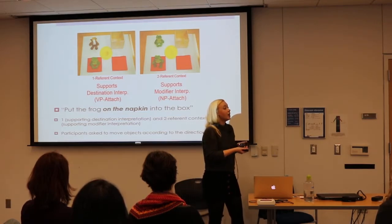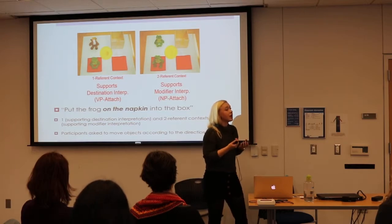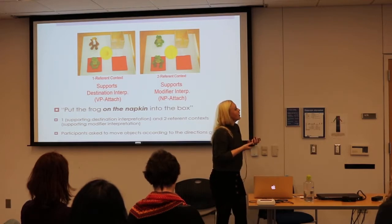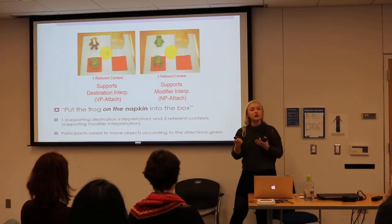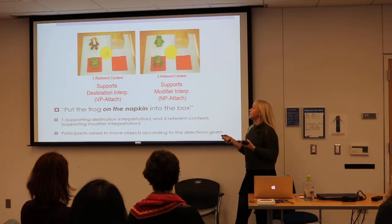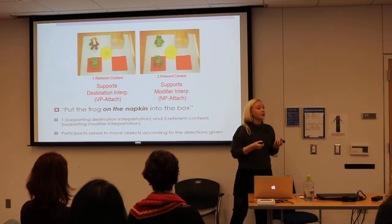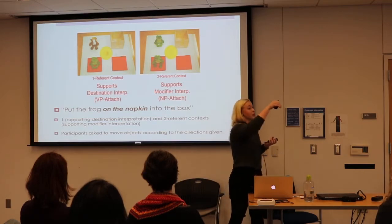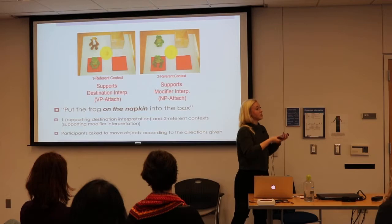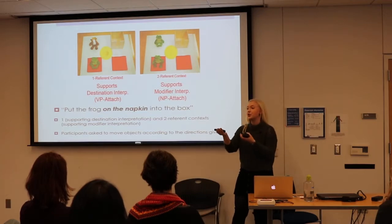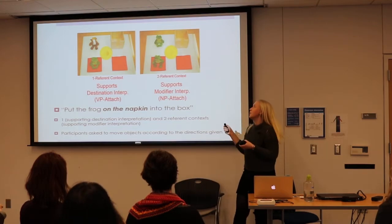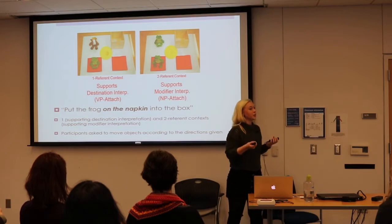What we saw in child data varied a little bit because children had trouble integrating the visual context. Children typically showed the destination interpretation — they would put the frog on the napkin — and this occurred in both the one-referent and two-referent contexts, telling us they had trouble integrating the visual world into their interpretation of the sentence.